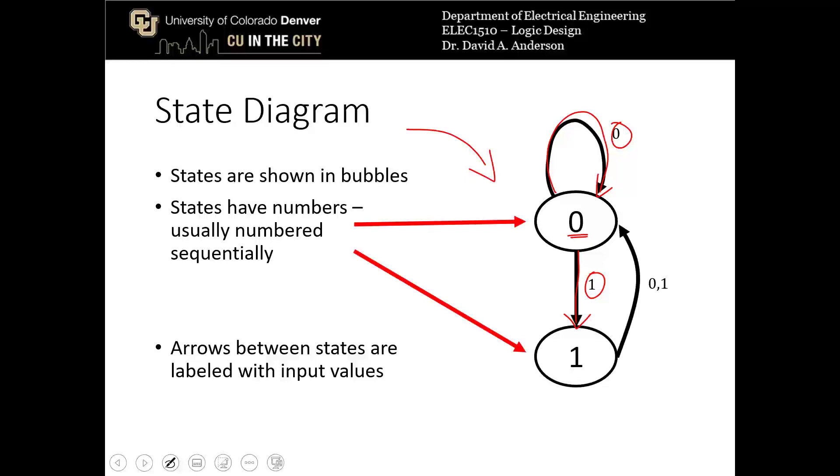If we're currently in state 1, which again represents a stable flip-flop output, and we receive either a 0 or a 1, so 0 comma 1 means either 0 or 1 are inputs linked to that arrow, then we return to state 0. So there are lots and lots of combinations of states and how you transition between states based on the inputs.